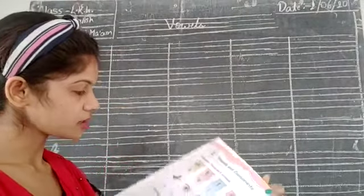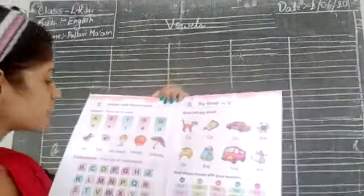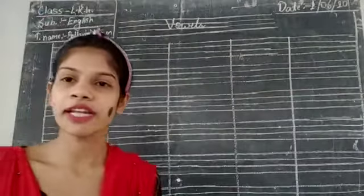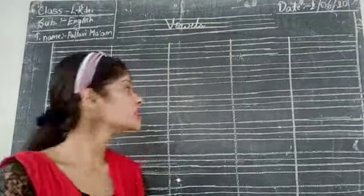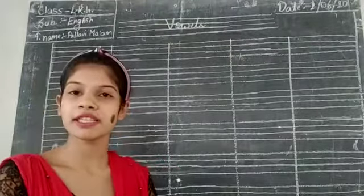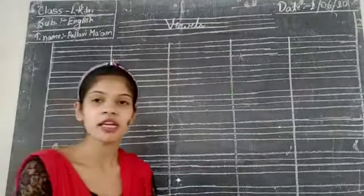So last class we learned about vowels and consonants. So here is your Chapter 2, vowels and consonants. We already wrote vowels and consonants from A to Z. That is, which letters in the alphabet are vowels and which letters in the alphabet are consonants.